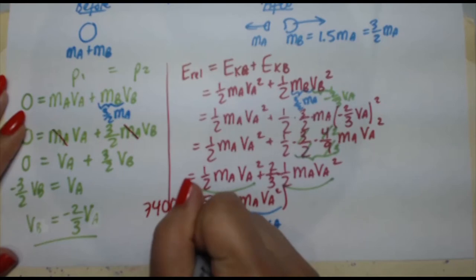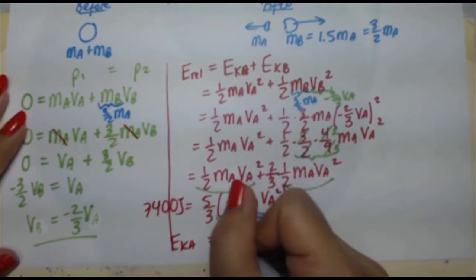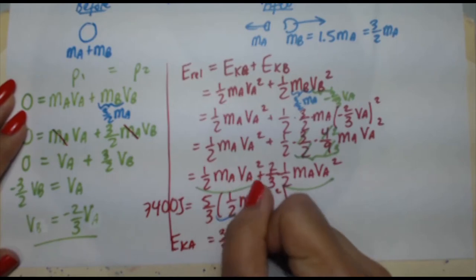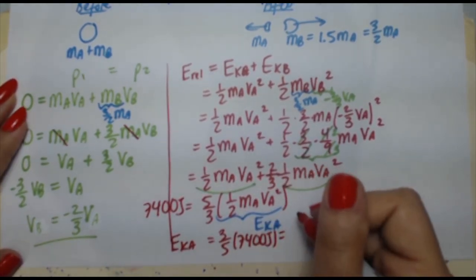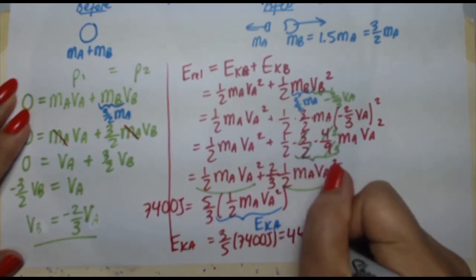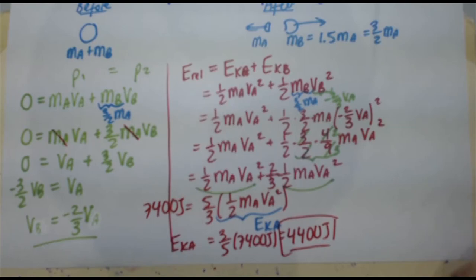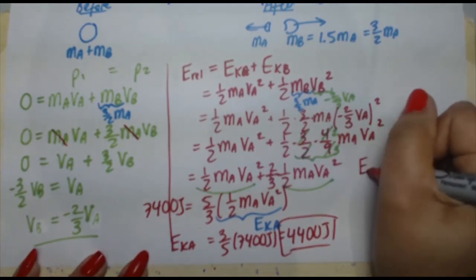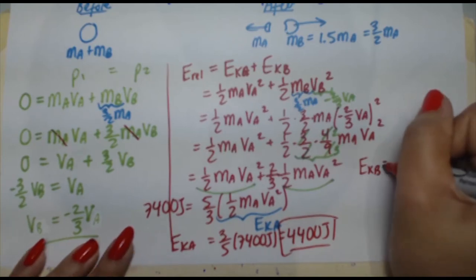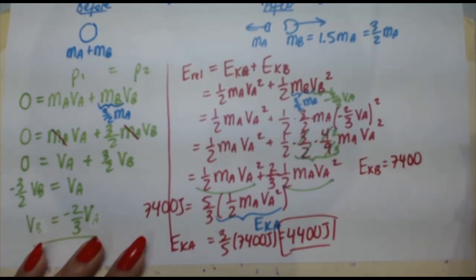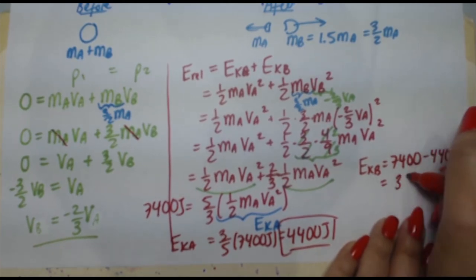So to get EKA by itself, all you do is take this 7,400, multiply by 3 fifths. So 3 fifths times 7,400 joules, and you're going to get that EKA is 4,400 joules. So that's how you do for EKA. EKB is even simpler. You know that the sum of EKA and EKB have to be 7,400. So EKB is just 7,400 minus 4,400, leaving you with 3,000 joules.